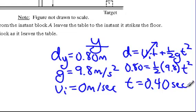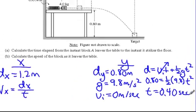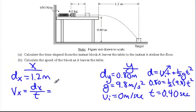Now, something we know about time: time is the same in the Y as in the X. It's the only thing that's the same in the Y and the X. So when we use VX equals DX, that's 1.2 meters, divided by time, 0.40 seconds.